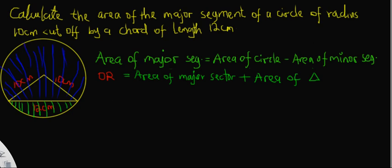Having said that, it is clear and reasonable to see that to calculate the area of this major segment, all we need to do is calculate the area of the whole circle and subtract the area of the minor segment.